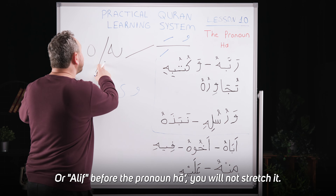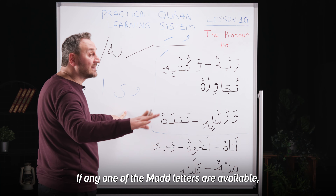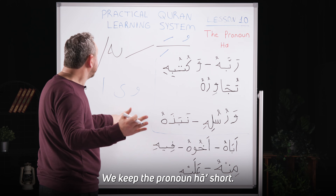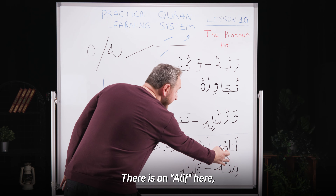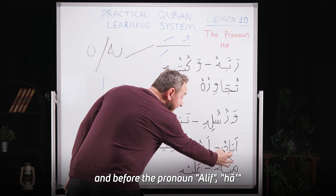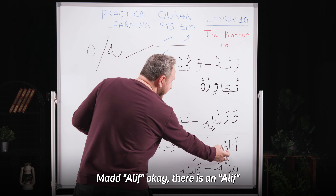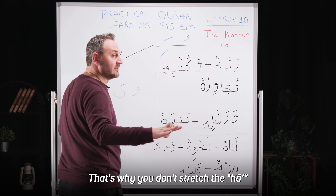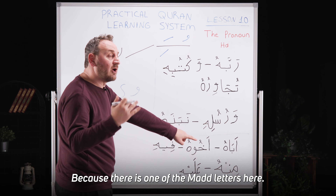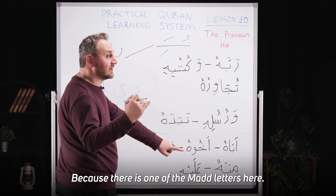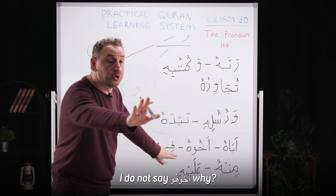When we're reading the Qur'an, if we see a mad letter — I mean vav, ya, or elif — before the pronoun Ha, you will not stretch it. If any one of the mad letters is present before the pronoun Ha, we keep it short. For example, you see there is an elif here — a mad elif — before the pronoun Ha. That's why you don't stretch the Ha.